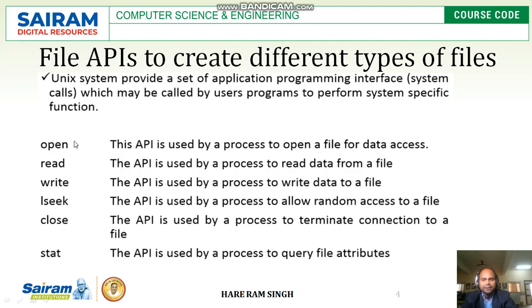The different types of file APIs in the Unix operating system are: open API, read API, write API, lseek API, close API, and stat API.